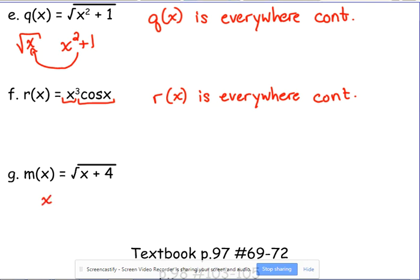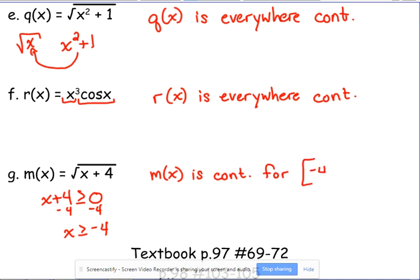x plus 4 greater than or equal to zero. Well, then that says this function is only defined for x's that are greater than or equal to negative 4. So m(x) is continuous for negative 4 to positive infinity, because those are the only places where it's defined.